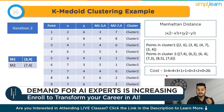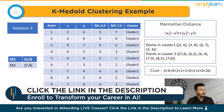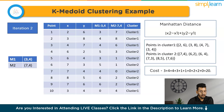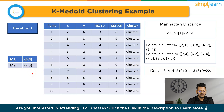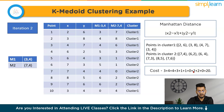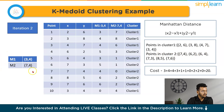In iteration two, the clusters are updated. Cluster one contains (2,6), (3,8), (4,7), and (3,4). Cluster two contains (7,4), (6,2), (6,4), (7,3), (8,5), and (7,6). The medoids are now (3,4) and (7,4). Since the cost of 20 is less than the previous cost of 22, we keep replacing medoids with non-medoid points and select the set of medoids with the least cost. These become our final clusters and medoids.